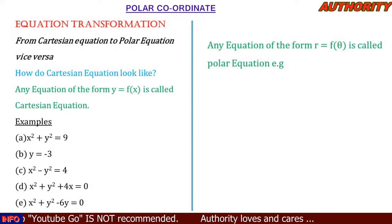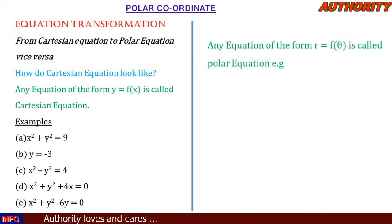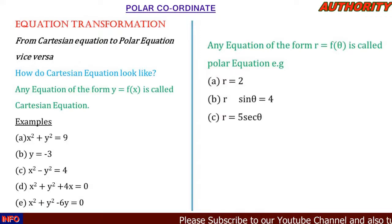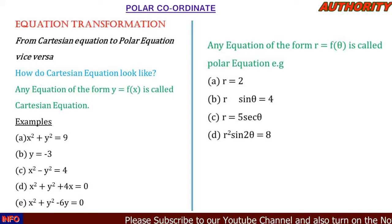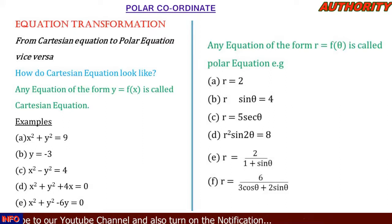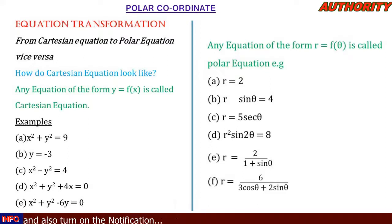Any equation of the form r = f(θ) is called a polar equation. Examples include: r = 2, r·sinθ = 4, r = 5·secθ, r²·sin2θ = 8, r = 2/(1 + sinθ), and r = 6/(3cosθ + 2sinθ). These are all polar equations.